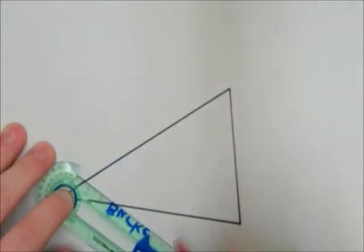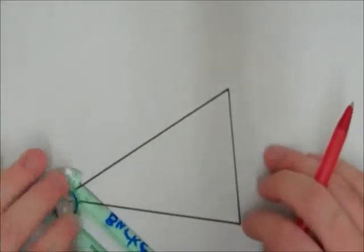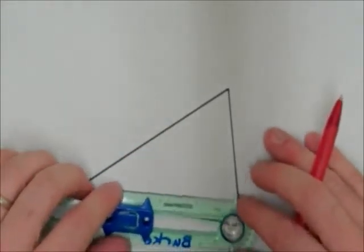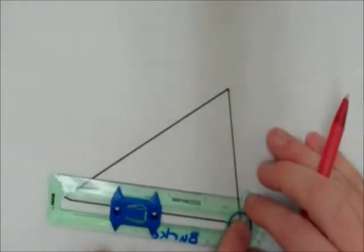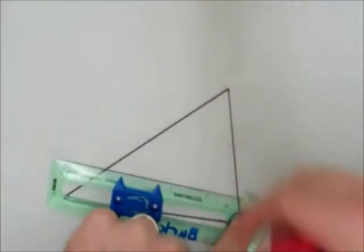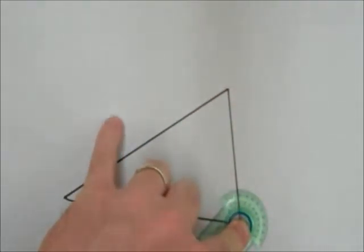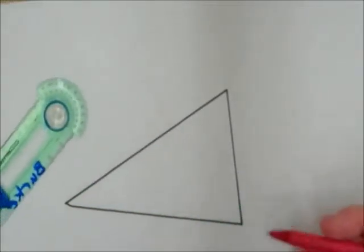Make a mark above and a mark below, and then turn your compass around the other way and make the same two marks above and below. So here's one, and there's the other.